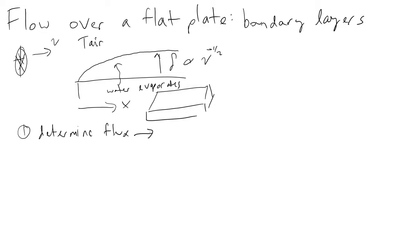Step one: determine flux. Flux is equivalent to a quantity per area per time. Because we know a reading of mass over time, we know dm/dt, the rate of mass change. Dividing that by the area of the tray gives us the flux, N_A, of water.